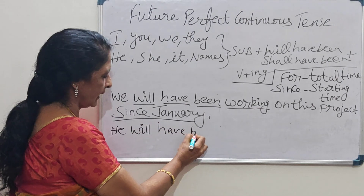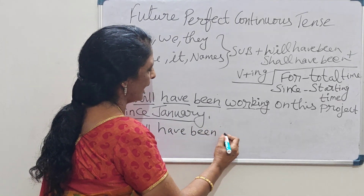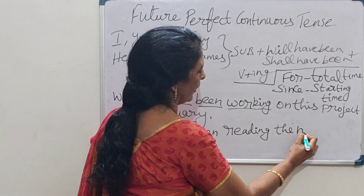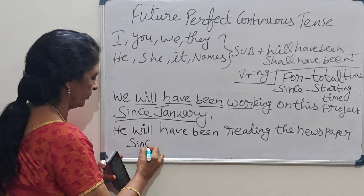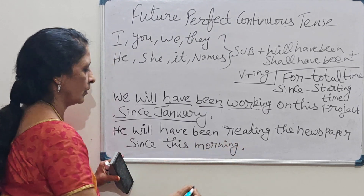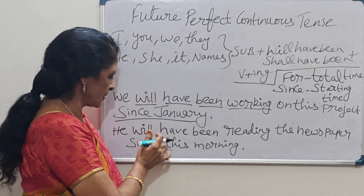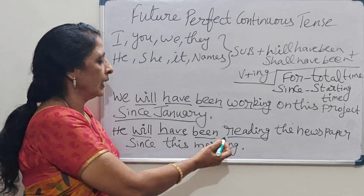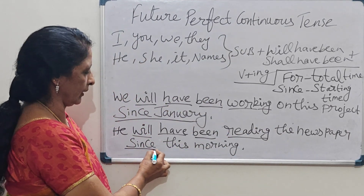Second example: 'He will have been reading the newspaper since this morning.' Subject is 'he,' then 'will have been,' then 'reading' — verb plus ing — and 'since this morning' for starting time.